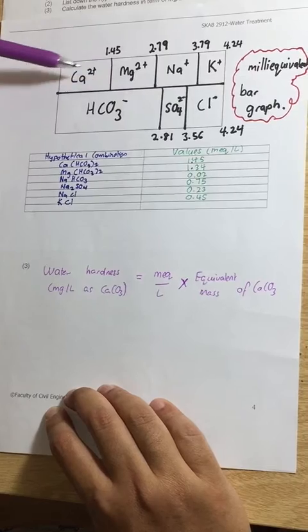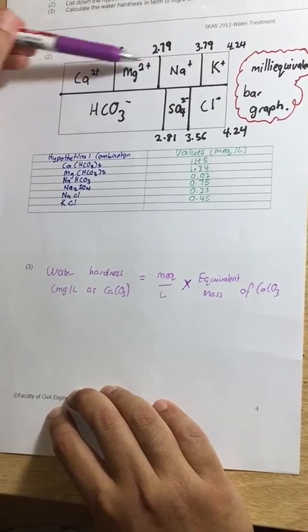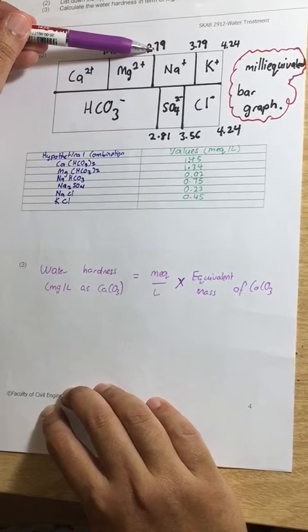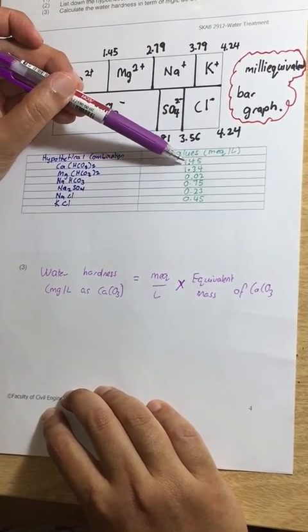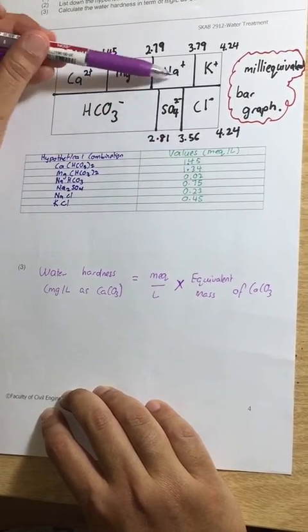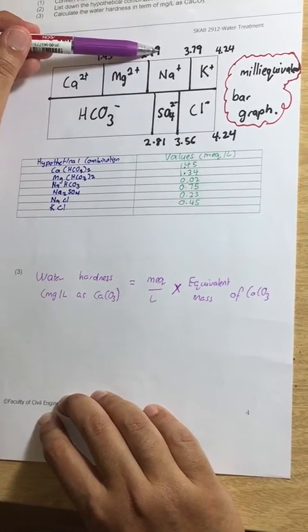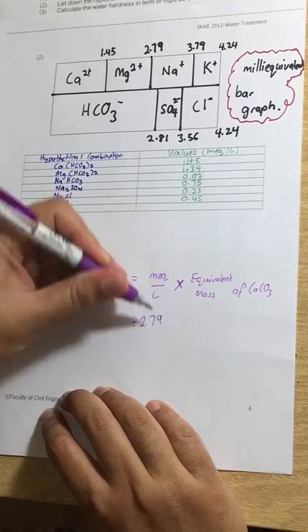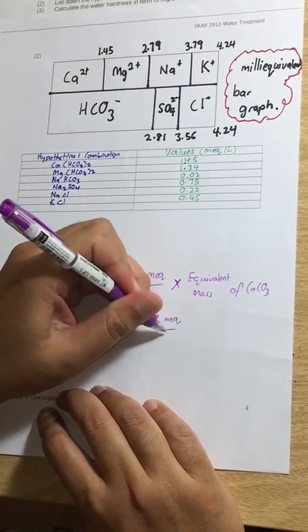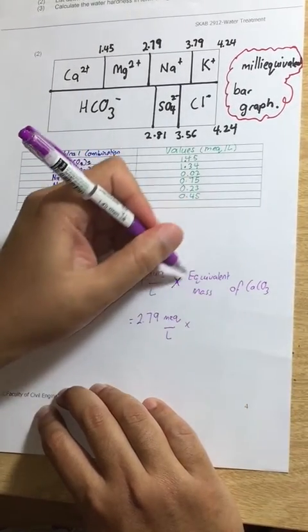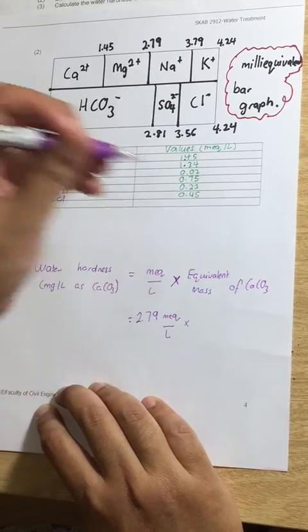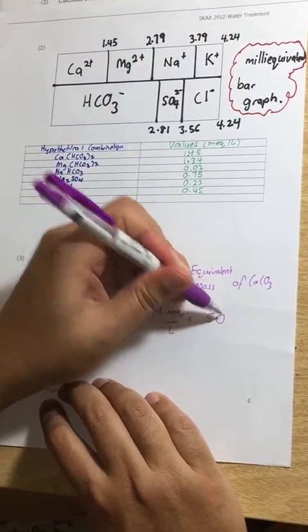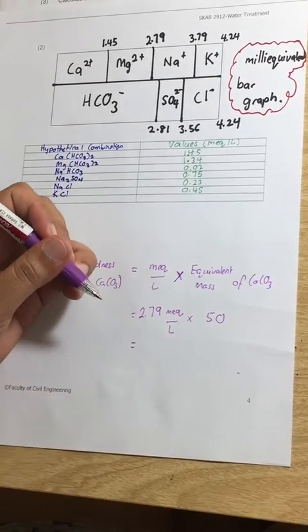Calcium and magnesium. So from here, you can see the concentration of these two is 2.79 milliequivalents per liter - basically 1.45 plus 1.34. So that's 2.79 milliequivalents per liter times the equivalent mass of calcium carbonate, which we've already calculated as 50.